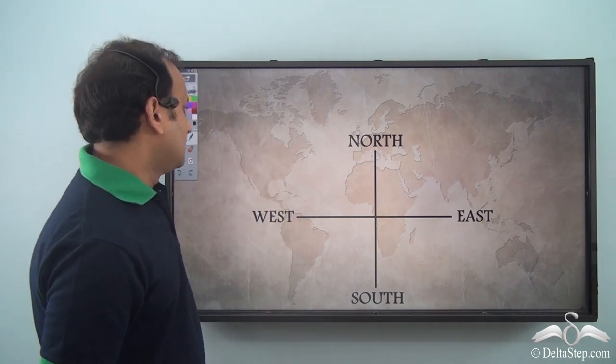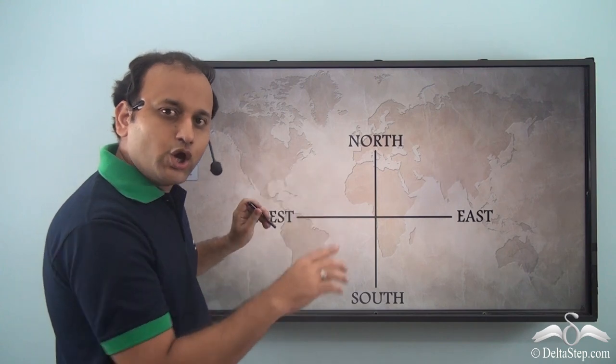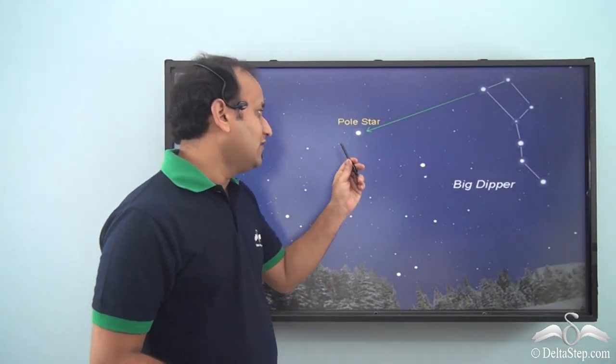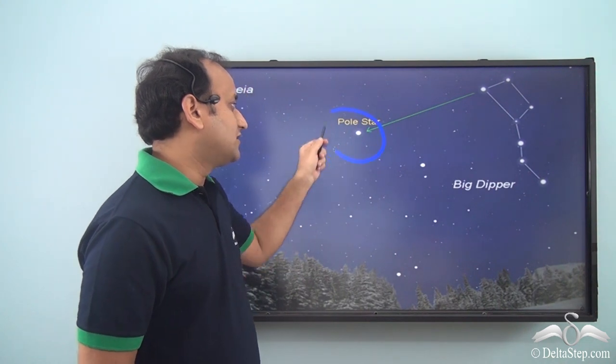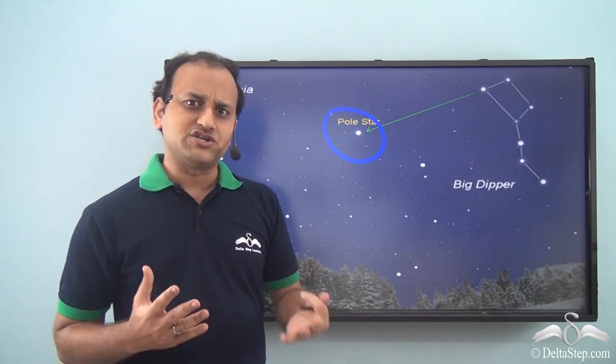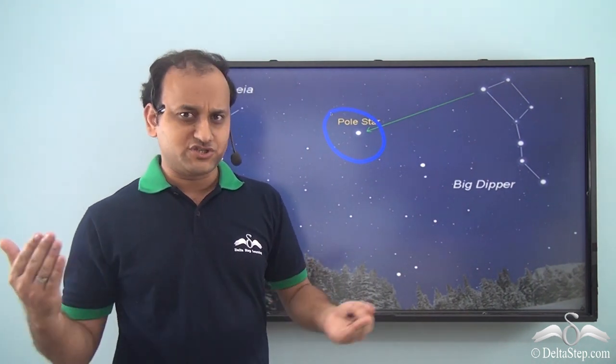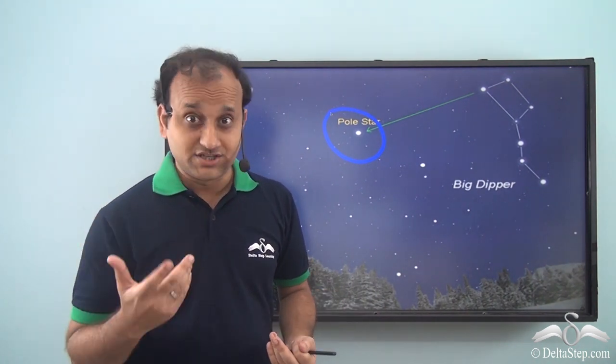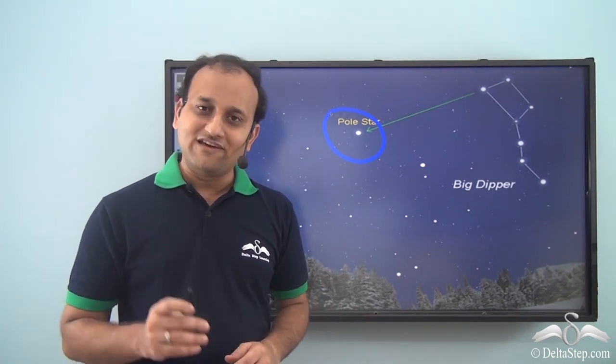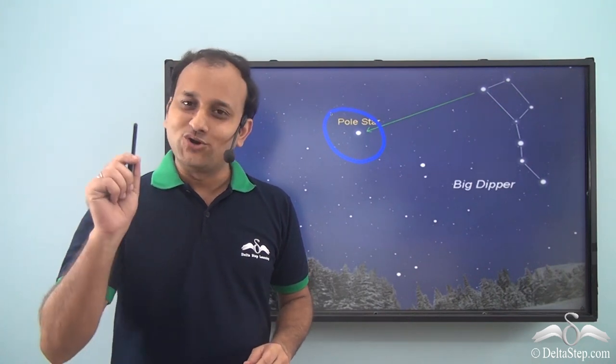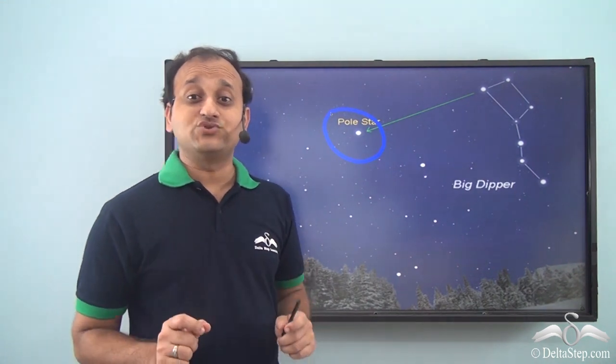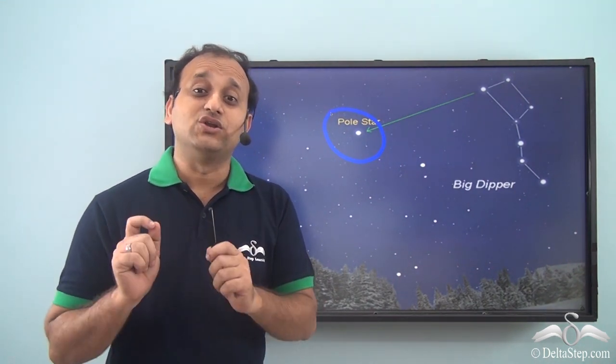Well, in case there is no sunlight, then you can follow the pole star. Now pole star is a very unique star. While all the different stars you will see changing their positions all the time because the earth is rotating, the pole star never changes its position. You can always see the pole star in the north direction.